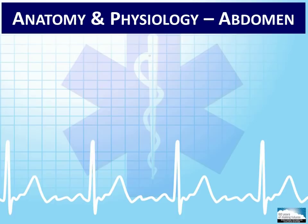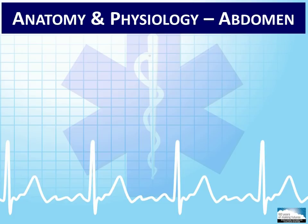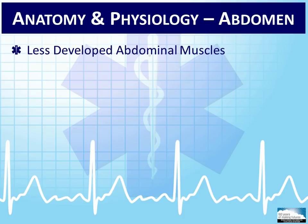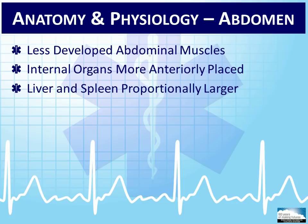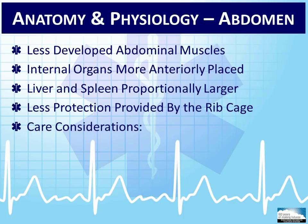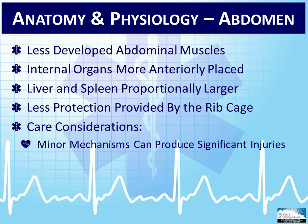A small child has a protruding abdomen or belly, which is actually a normal finding in small pediatric patients. The muscles of the abdomen are less developed, and the internal organs are more anterior in the body. In the abdominal cavity, the liver and spleen are proportionally larger relative to the rest of the organs, and the soft, pliable ribs offer less protection to the abdominal organs. When managing pediatric patients with potential illness and injuries, seemingly insignificant external forces applied to the abdomen can cause serious internal multi-organ injuries.